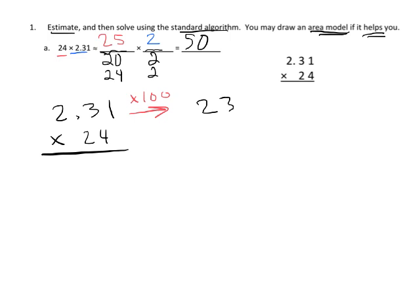Then we're going to multiply using the standard algorithm. So 4 times 1 is 4, 4 times 3 is 12 carry the 1, 4 times 2 is 8 plus 1 is 9.